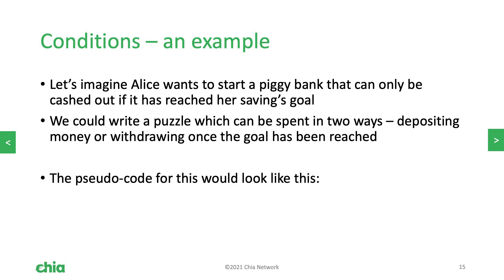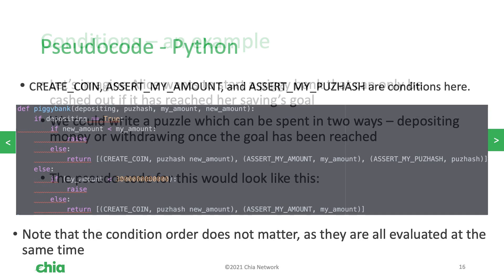This is fundamentally how coins and puzzles communicate with the blockchain. Some examples of conditions would be: assert that my amount is 200, or assert that the current block height is greater than 3008. We have a full list of the conditions available on the chialisp.com documentation website. Let's put this into practice. Let's imagine Alice wants to write a new smart contract that acts as a piggy bank so she can only cash out if she's reached her savings goal. We would write a puzzle that can be spent in two ways: depositing money or withdrawing money. Let's take a look at the pseudocode in Python for what that would look like.